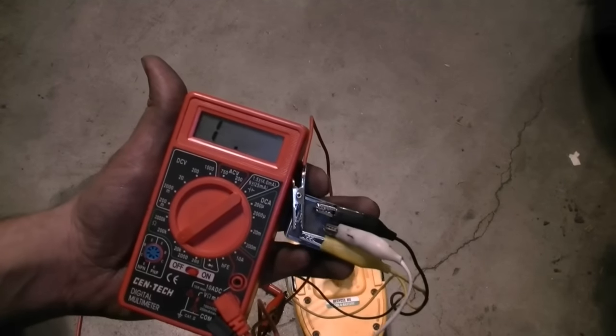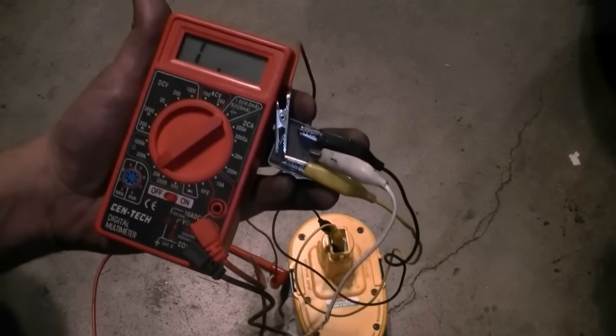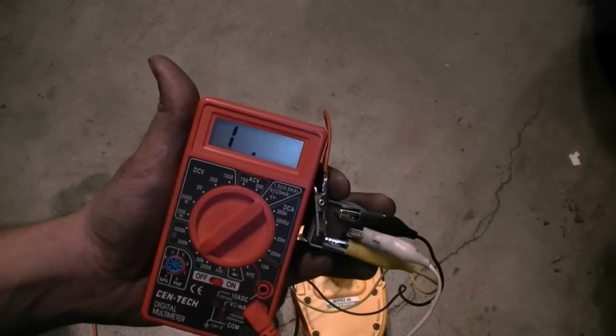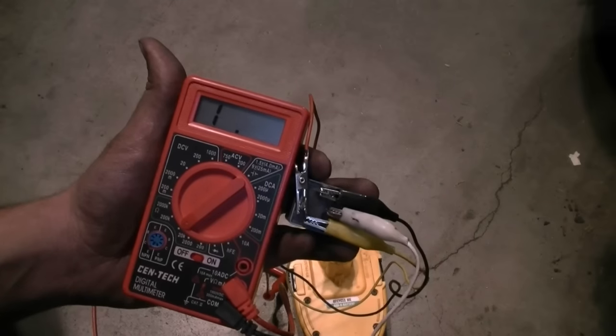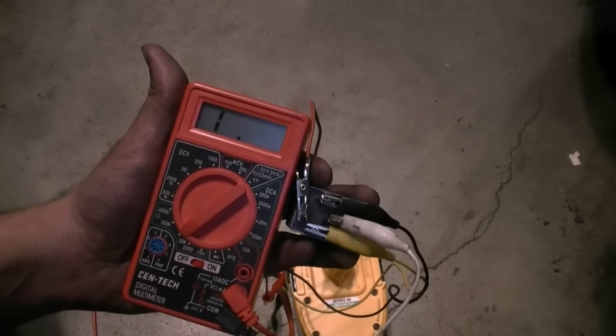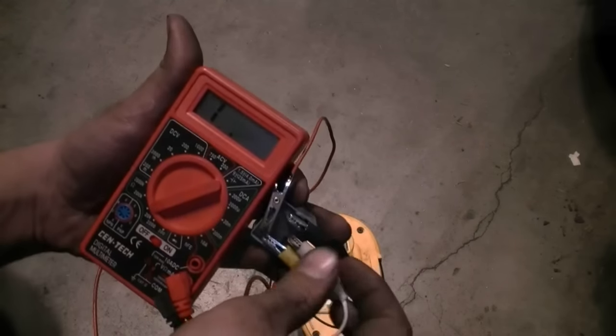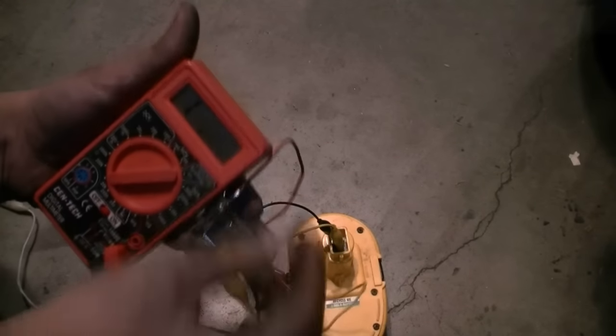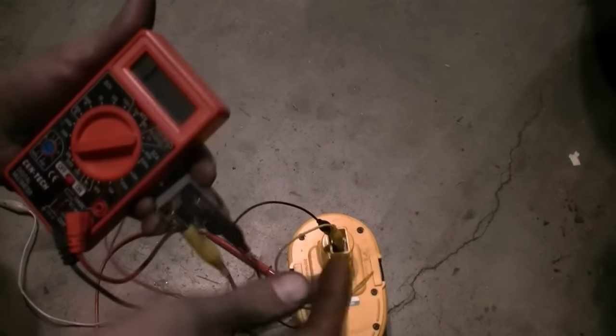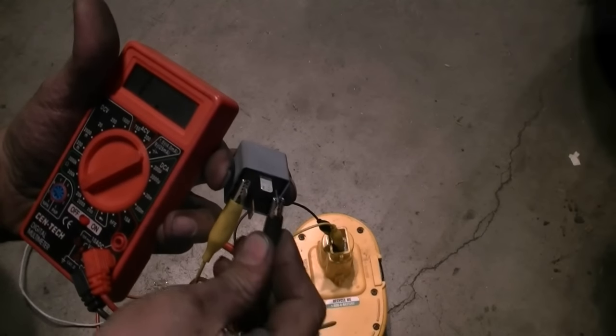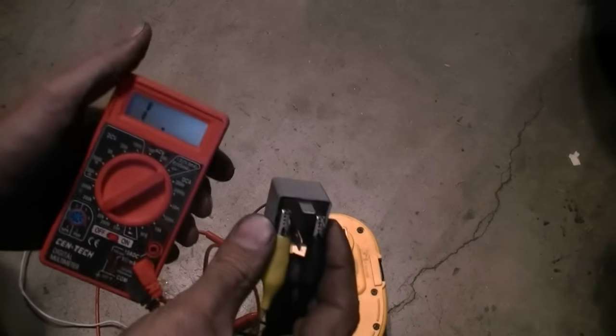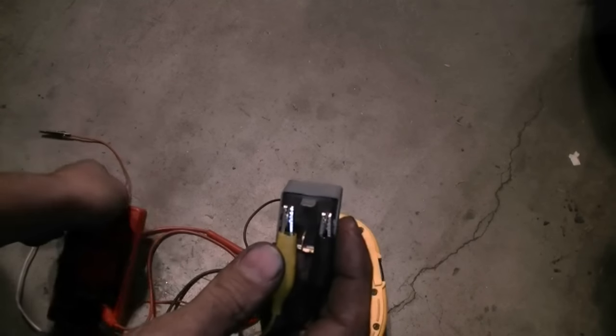So this again goes to show you whenever you're testing a relay you want to double check the resistance between the second circuit, or 30 and 87 in our case, and make sure there's no resistance. Because I would say even experienced mechanics, I've seen them do this, just go listen for a click, oh it's a good relay. No, sometimes it's not a good relay.